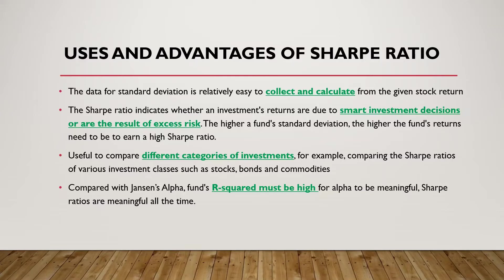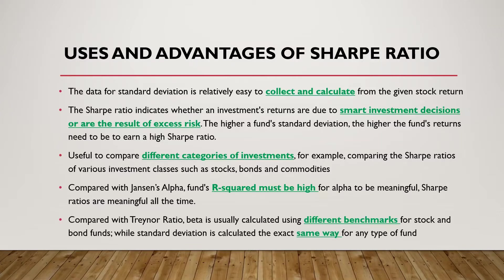Later we are also going to talk about another ratio called the Treynor ratio. The Treynor ratio, instead of dividing by the standard deviation, divides by something called beta, which we will explain later. The beta will change depending on which benchmark is used — for example, the FTSE 100 or the S&P 500. However, for the Sharpe ratio, the standard deviation calculation will always be the same, regardless of whether you are an institutional investor or a retail investor.